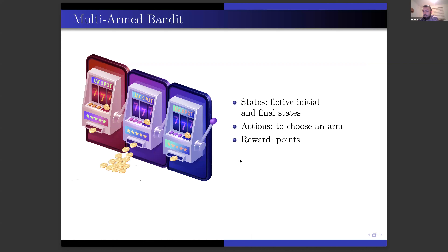Напомню содержательно, в чём заключается постановка задачи. Допустим, есть игровые автоматы, и у каждого игрового автомата есть вероятность выигрыша. Дёргаешь за ручку — получаешь выигрыш с какой-то вероятностью. Вероятность эта неизвестна. При этом нам нужно дёргать за ручки так, чтобы достаточно быстро понять, у какого автомата вероятность выигрыша максимальная, и затем уже за его ручку дёргать.